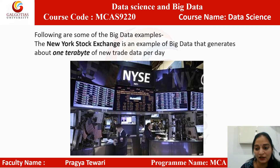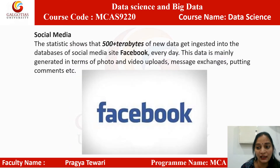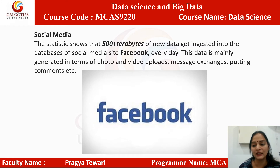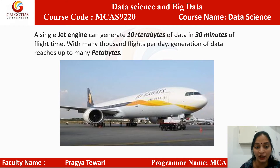Here are some big data examples. The New York Stock Exchange generates about one terabyte of new trade data per day. Social media: statistics show that 500 plus terabytes of new data gets ingested into Facebook's database every day, mainly generated through photo and video uploads, message exchanges, and comments. And a single jet engine can generate 10 plus terabytes of data in 30 minutes of flight time — with many thousands of flights per day, data generation reaches up to many petabytes.